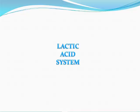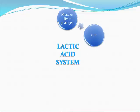So, the lactic acid system. The lactic acid system relies on your stores of glycogen within your muscle or your liver. This glycogen is stored in the liver and your muscles through your supply of carbohydrates from your diet — things like rice, pasta, and potatoes. This glycogen needs to be broken down by an enzyme called GPP. Imagine these enzymes are like Pac-Men — they eat away at things.